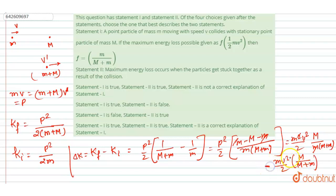Now you can see mv squared into M by (m + M) is the loss in kinetic energy with a negative sign. So you can see this f which we calculated here is M upon (m + M), not this. So this statement became incorrect.